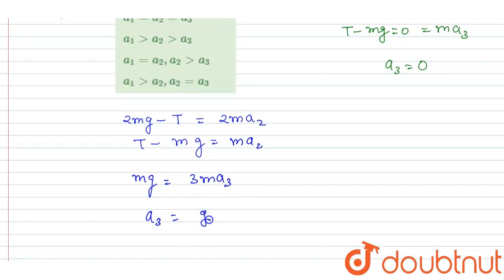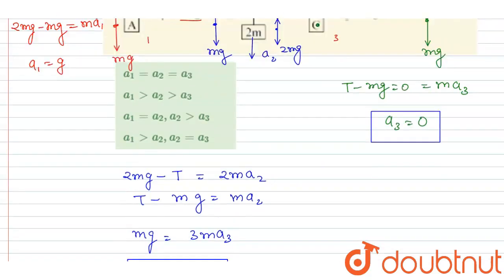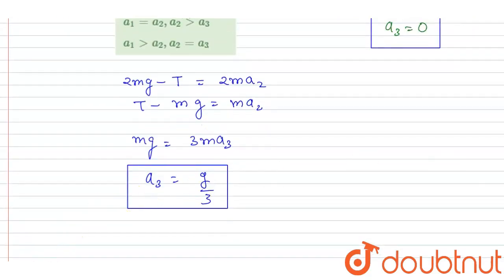And in this equation we got a3 equals zero. This is a2, this is a2, not a3, so this is a2.